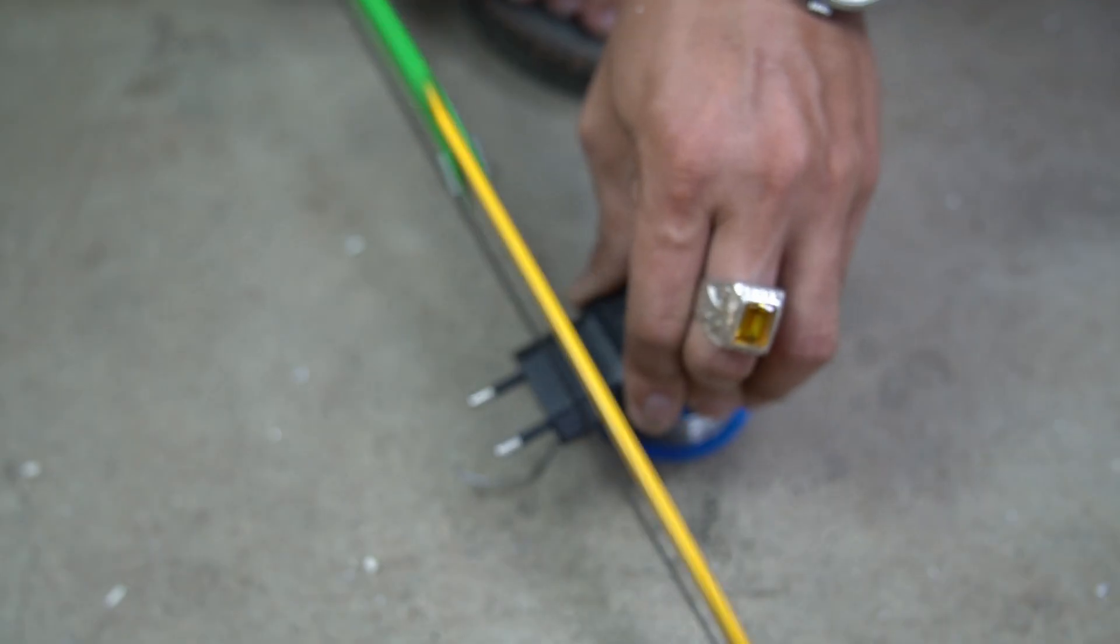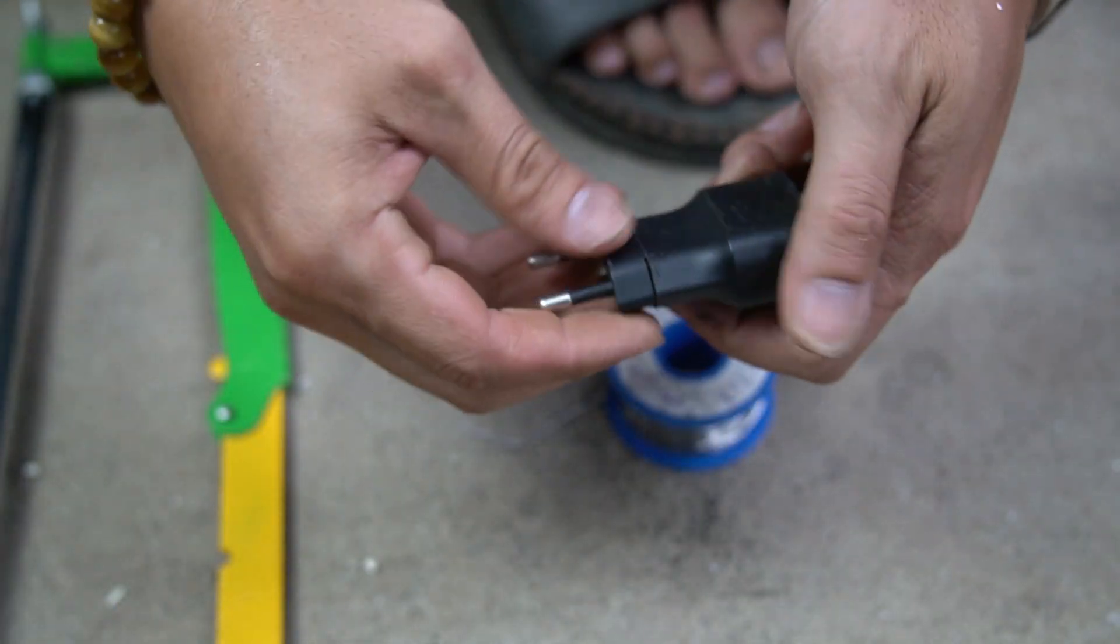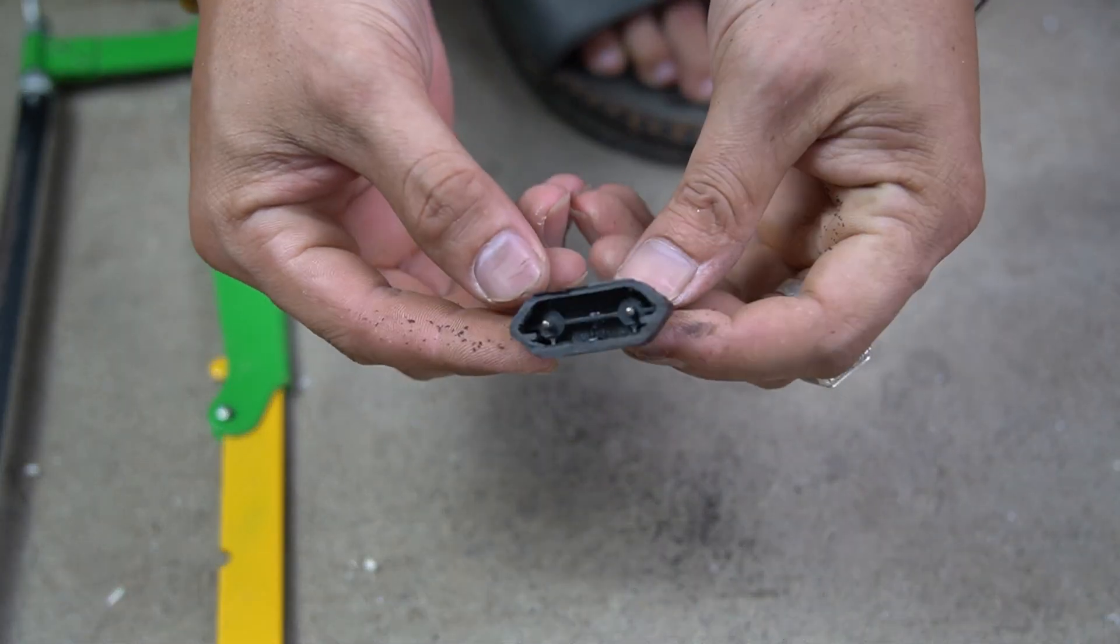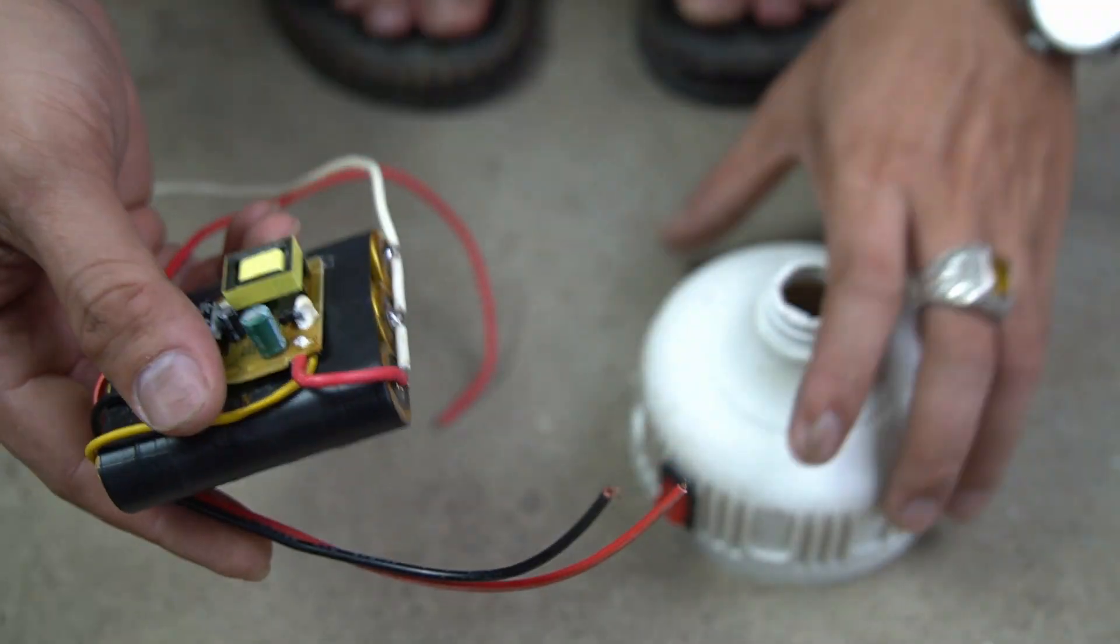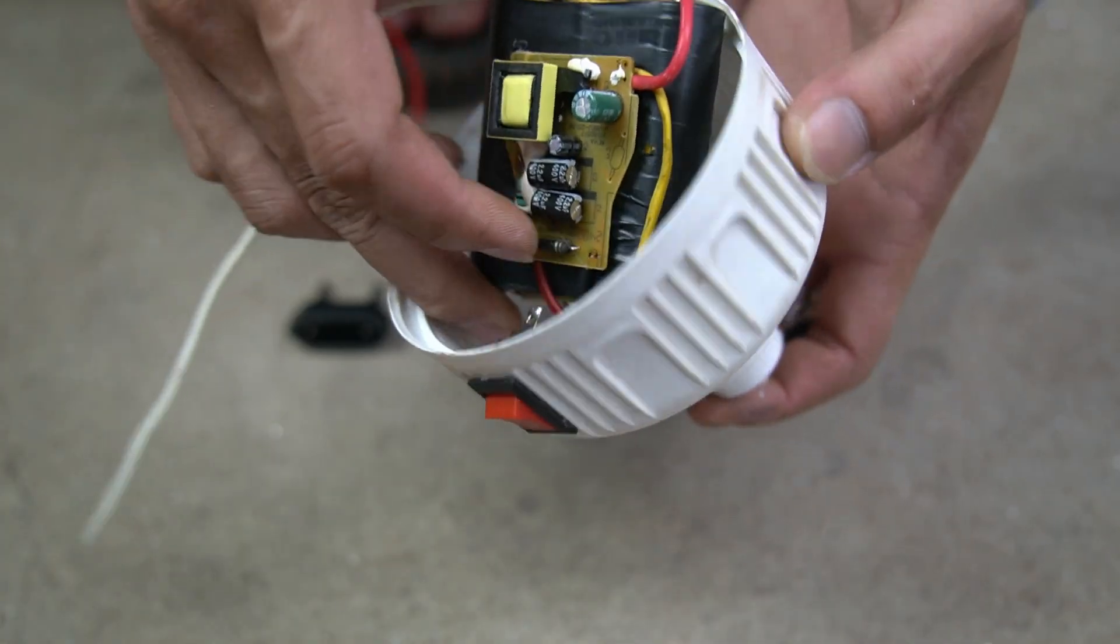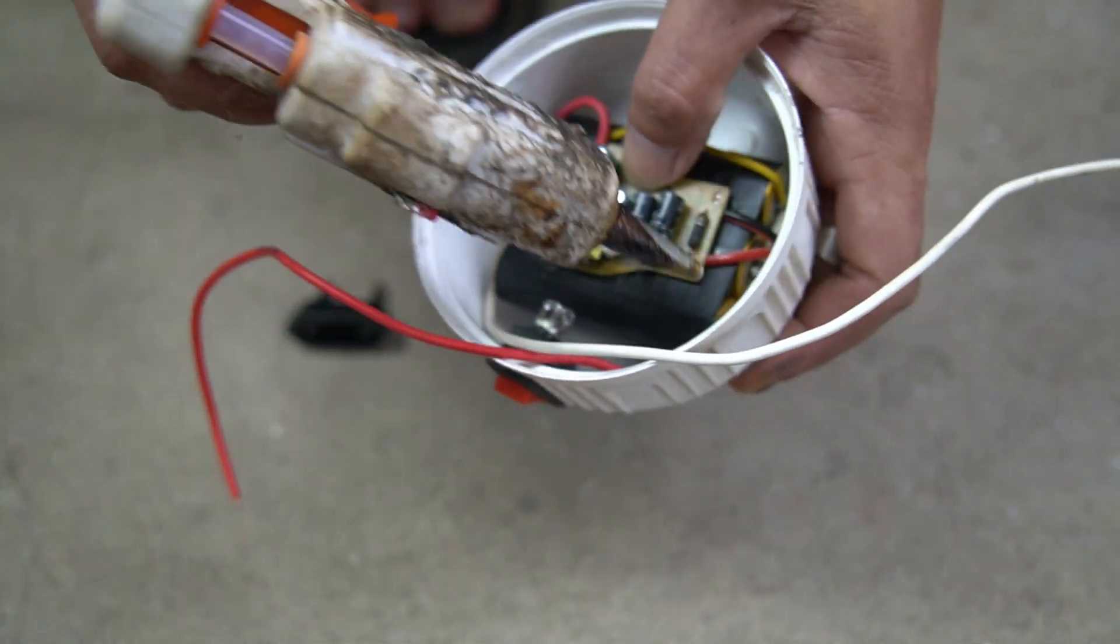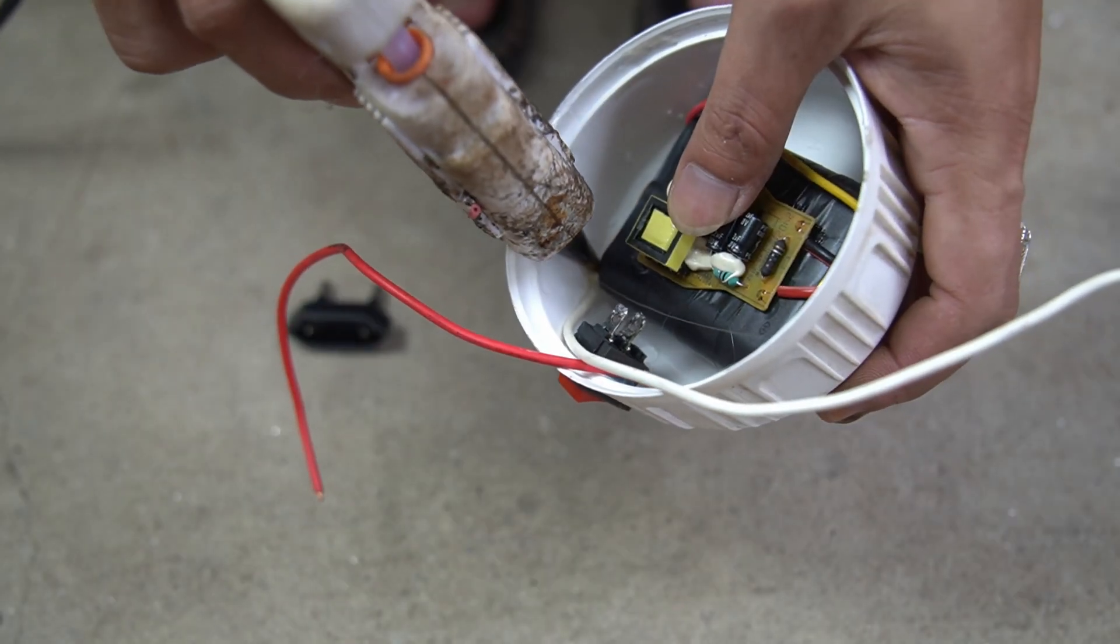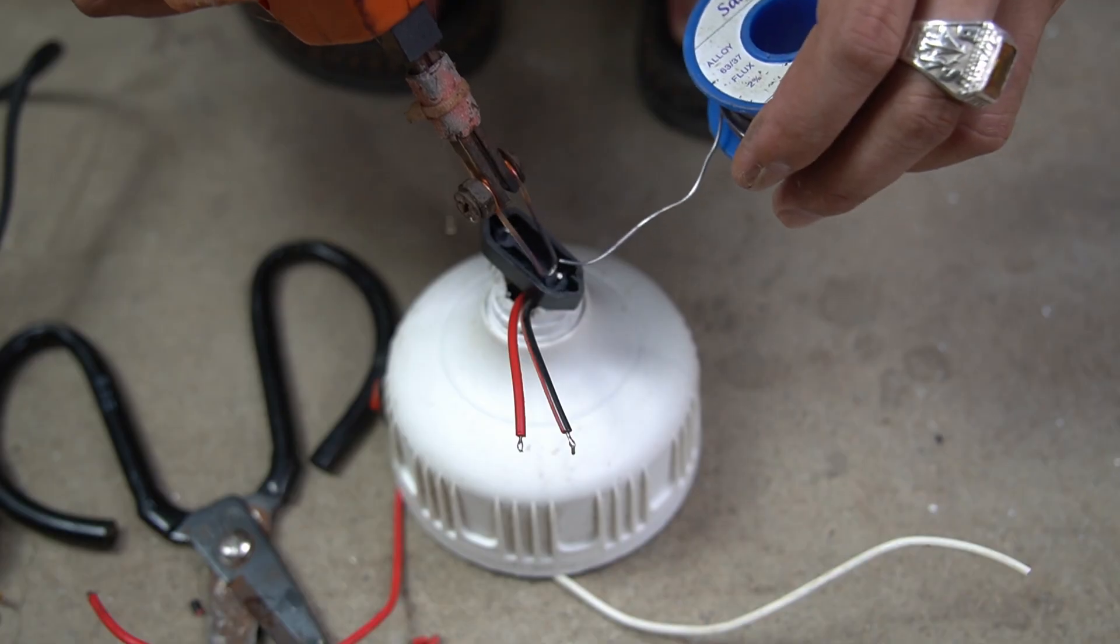I used a saw to cut off the plug part of the phone charger cord. Next, I will put the battery and circuit into the bulb housing. Use specialized glue to firmly attach the battery to the light bulb housing.